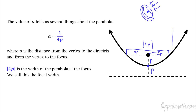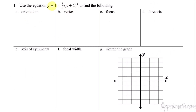Let's do some graphs. First, orientation: we identify which variable is being squared. X is being squared, so it's up or down. This A is positive, therefore it opens up. Vertex: it's what's with the X — plus one, so the vertex is at negative one, comma, what's with the Y is negative one, so it's positive one. The vertex is at negative one, comma one. Let's plot that point — there's our vertex.